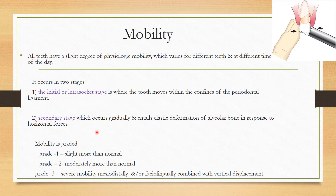Mobility can be checked using one finger and one instrument, or by two instruments. It is graded into grade 1, grade 2, and grade 3. Grade 1 is slight — more than normal. Grade 2 is moderately more than normal. Grade 3 is severe mobility, with mesiodistal or facial movement combined with vertical displacement.